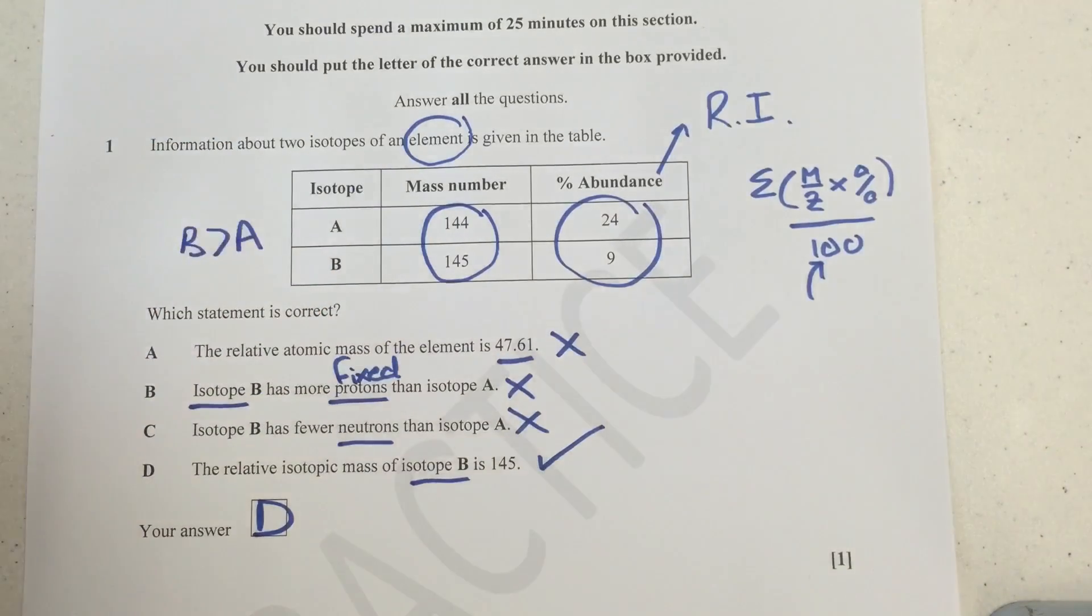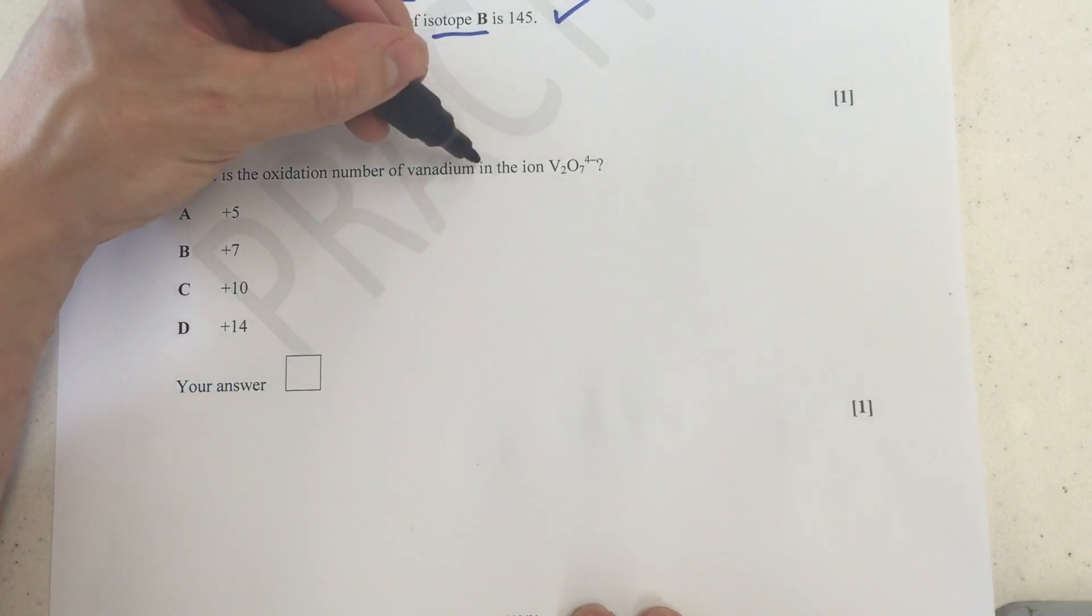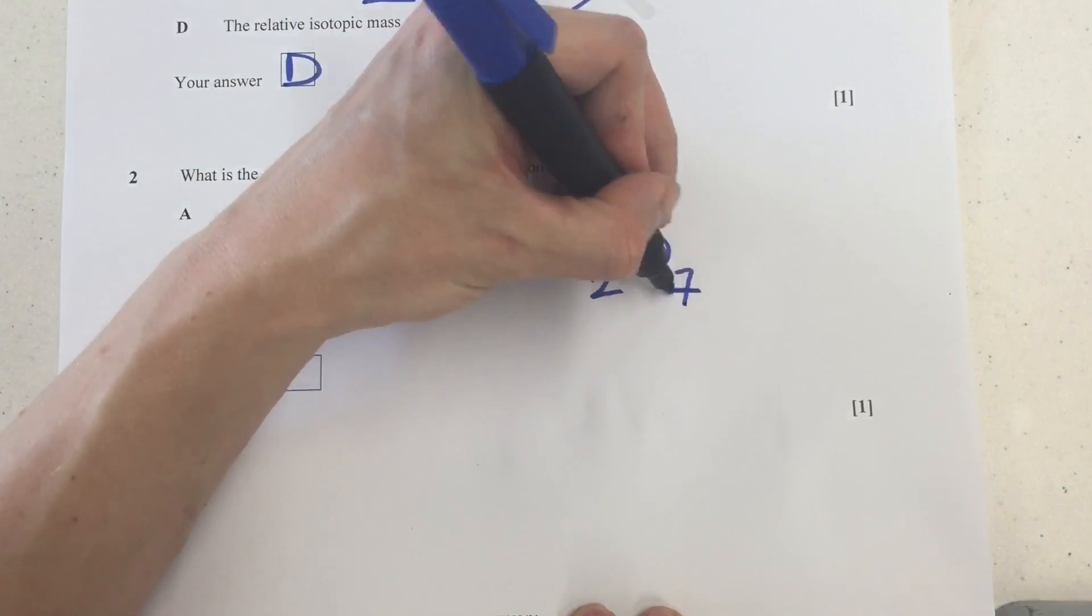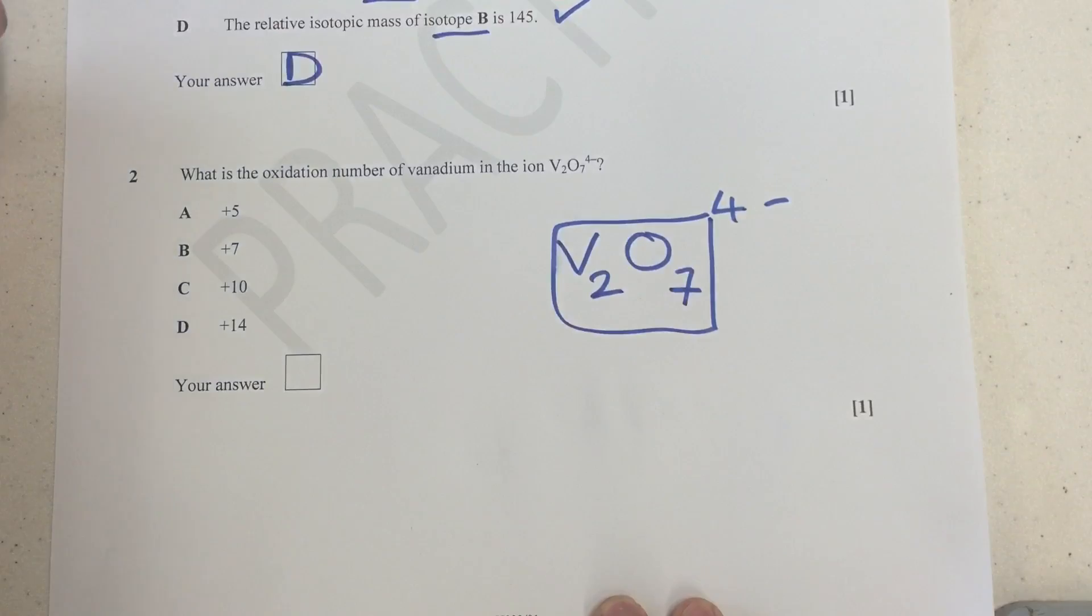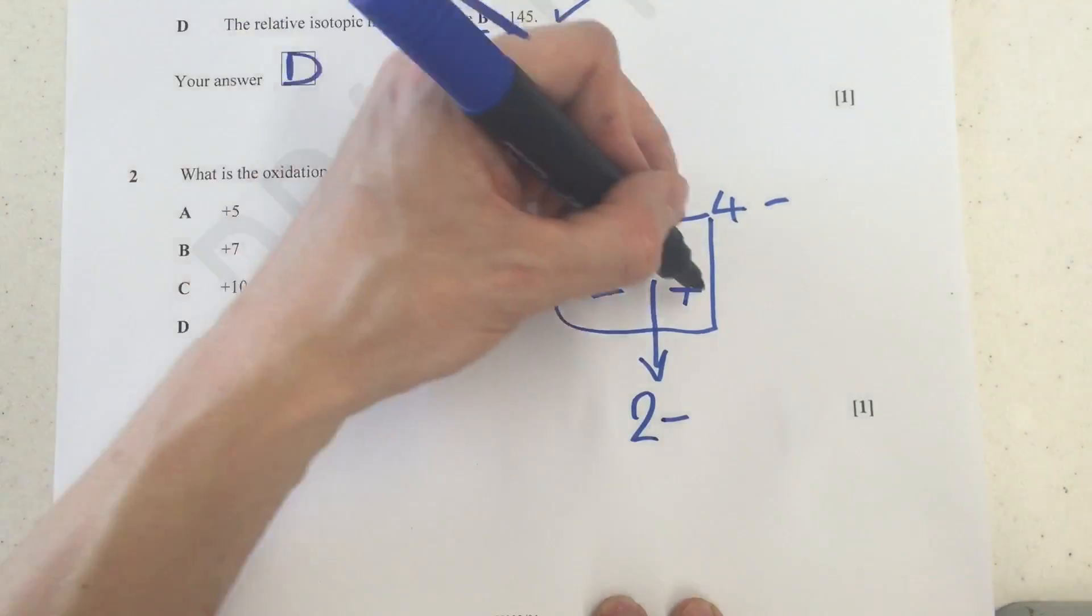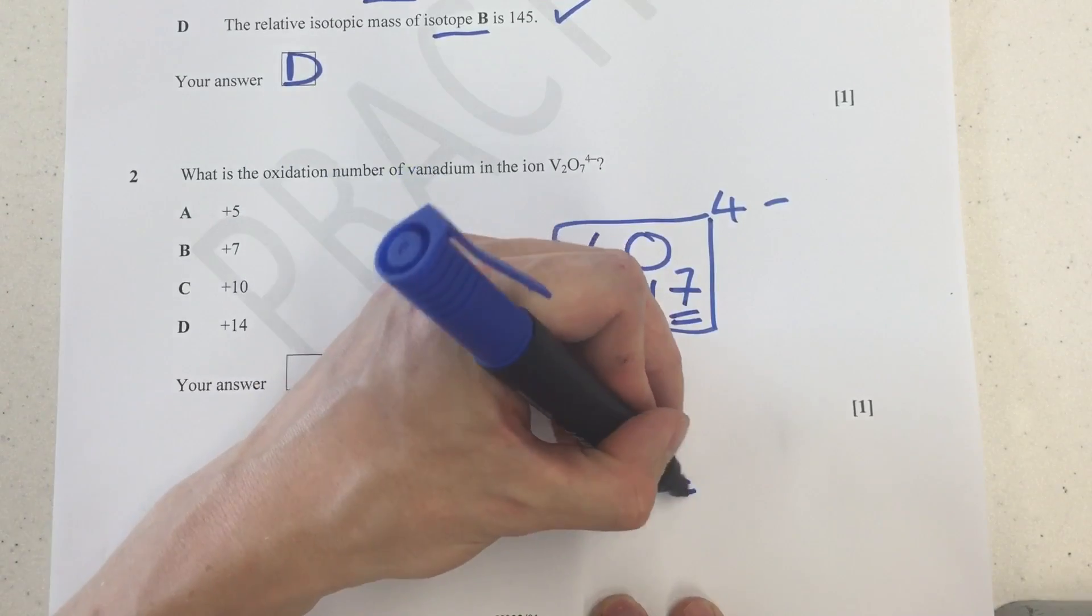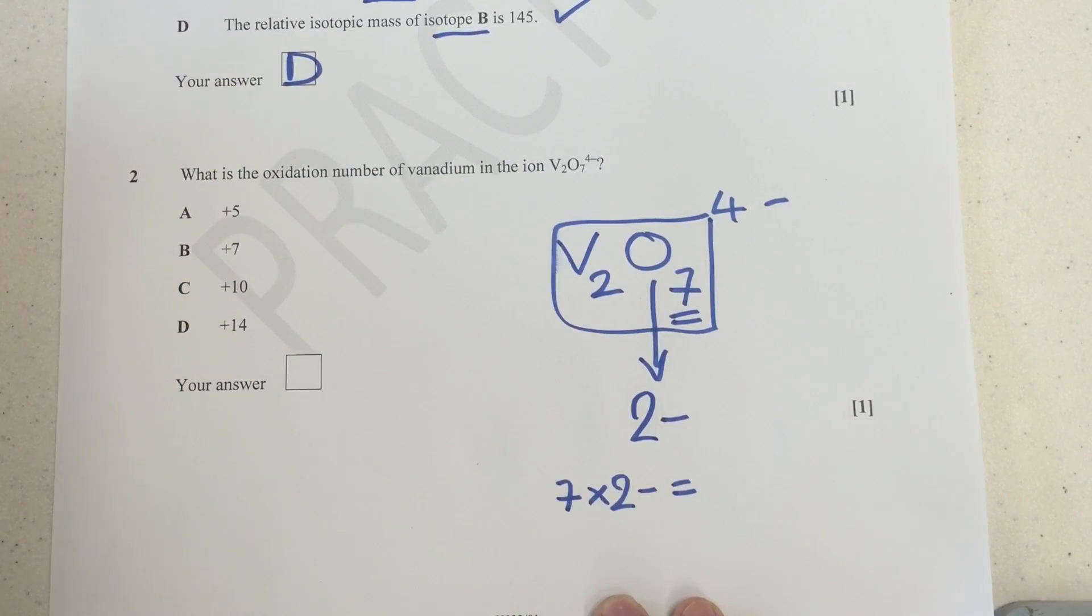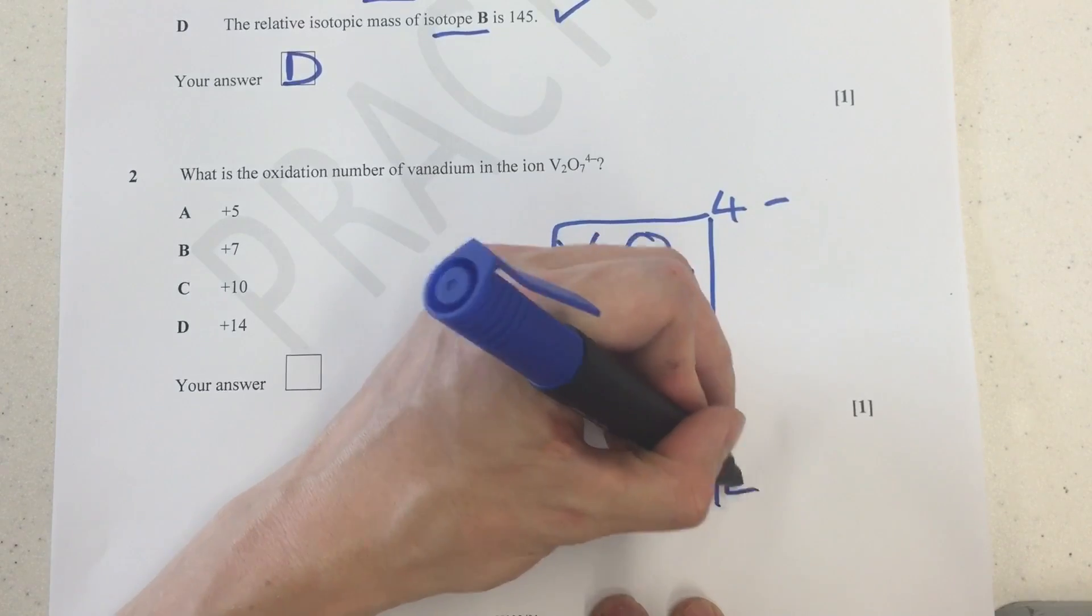So it absolutely has to be D is the correct answer here. But we've also eliminated the others based on the data we've been given. Next question. This one's a little tricky. Sometimes people really struggle with these. This is trying to determine the oxidation number of vanadium in V2O7 4-. Now, it's worth pointing out everything here with the elements adds up to 4- in terms of charge. Now, the oxygen, you do know that oxygen has a common charge of 2-, and you've got seven oxygen atoms there. So you need to do seven times the 2- to find out what kind of negativity the oxygen is contributing to this overall charge.